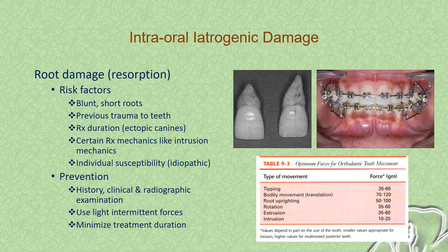Risk factors for root resorption include roots that are blunt and short, any previous trauma inflicted on the tooth, longer treatment duration, and certain treatment mechanics such as intrusion mechanics. There is also individual susceptibility towards root resorption. Prevention involves taking a careful history and doing a thorough clinical and radiographic examination. The forces employed to move the teeth must be light and intermittent, and treatment duration should be kept to a minimum.